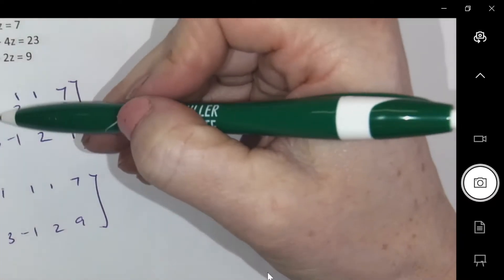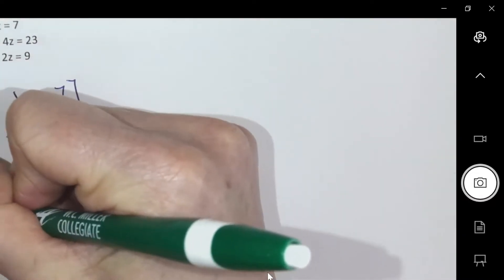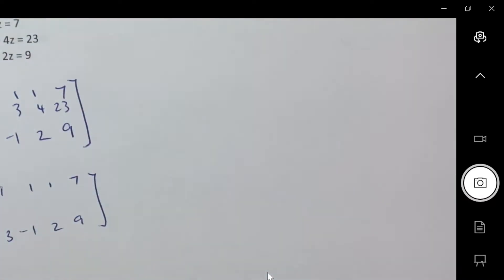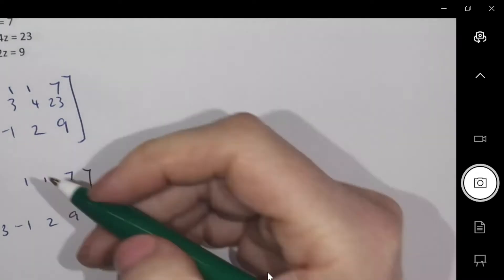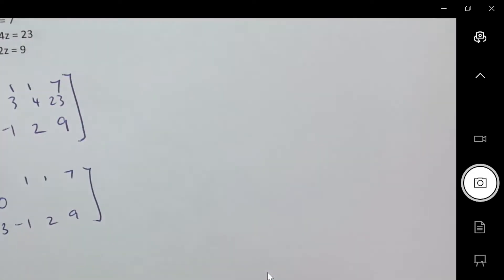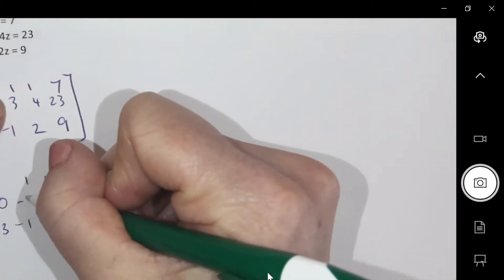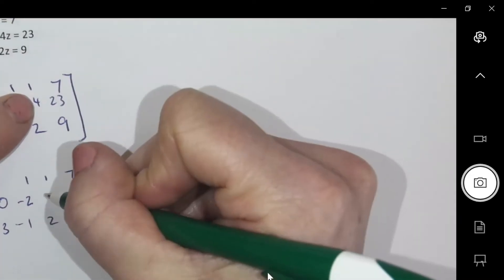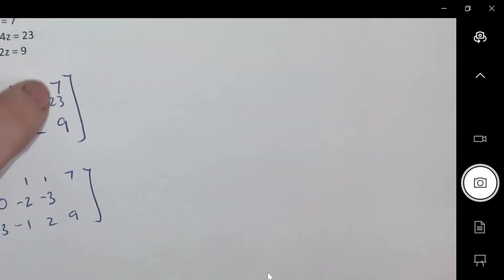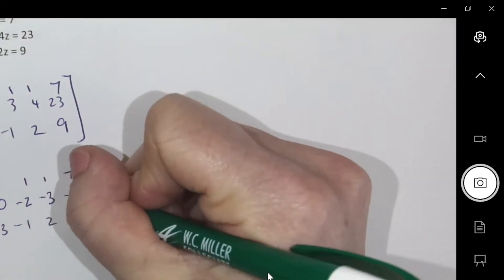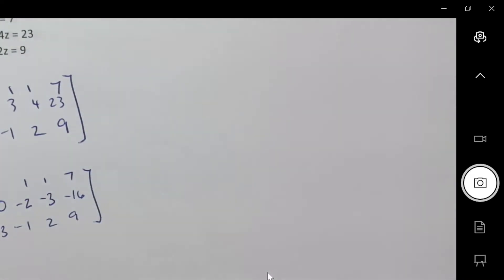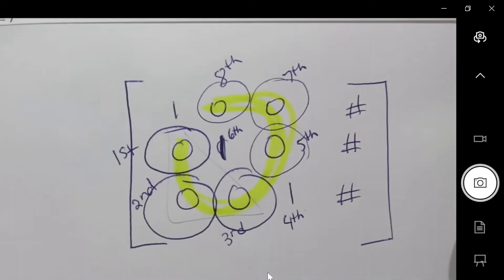I think I'm going to subtract. So row one minus two. Okay, makes zero. One minus three is negative two. One minus four, negative three. Seven minus 23, negative 16. Okay, got my checklist. Done.